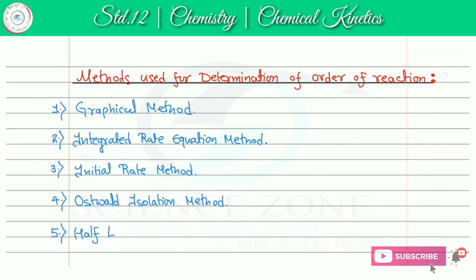Our fifth method is the half-life period method. This method is essentially a mathematical method in which we put different concentration terms into the half-life equation. The concentration term that satisfies our half-life equation tells us the order of the reaction. In the next step, we will discuss each method in detail.